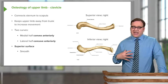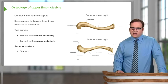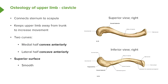By moving the upper limb away from the trunk, there is less chance for it to hit the chest wall, increasing the range of movement. Looking at the superior view of a right clavicle as if we're looking down onto it, we can see the sternal end and the acromial end. Superiorly, the clavicle is smooth — there are no undulations or grooves on this surface, so if you're seeing a smooth surface, you're looking at the superior surface of the clavicle.